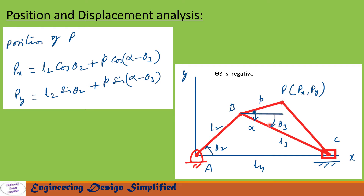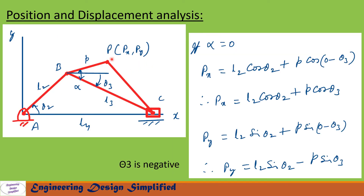The coupler point is at angle alpha from the coupler link. When alpha equals 0, point P lies directly on the coupler link. In that case, px equals l2·cos(theta2) plus p·cos(theta3), and py equals l2·sin(theta2) minus p·sin(theta3) — minus because the point comes below the horizontal. So we now have the two coordinates px and py when the coupler point is on the coupler itself.